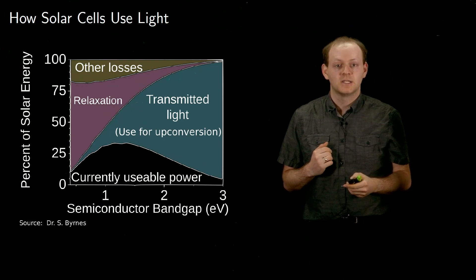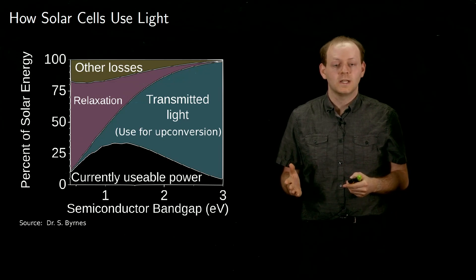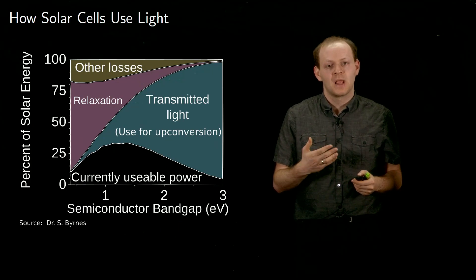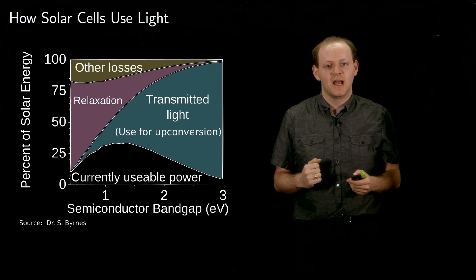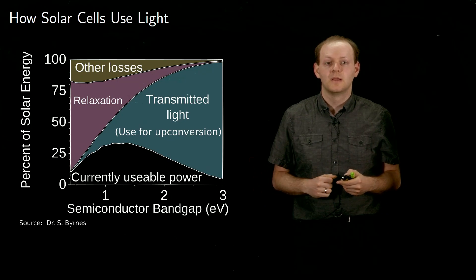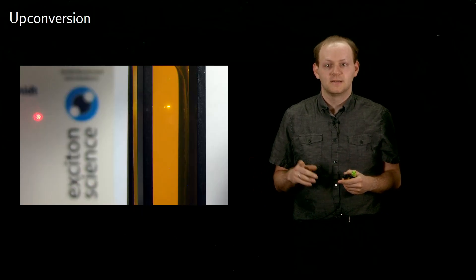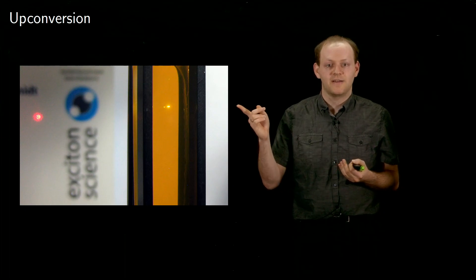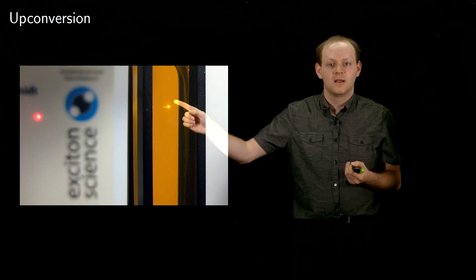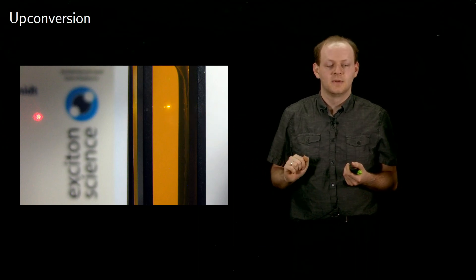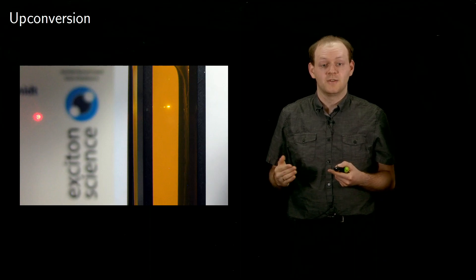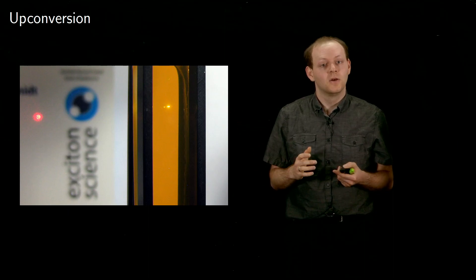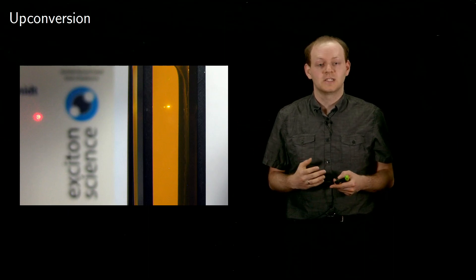Converting light to a lower energy is perfectly normal. Ordinary materials can absorb light, release some heat, and then release the remaining energy as light again. Upconversion materials, like in this example, take low energy light and convert it to higher energy light. Here, red light has been turned into yellow light. Yellow light has more energy than red light. We need to see how this can happen while obeying the law of conservation of energy.